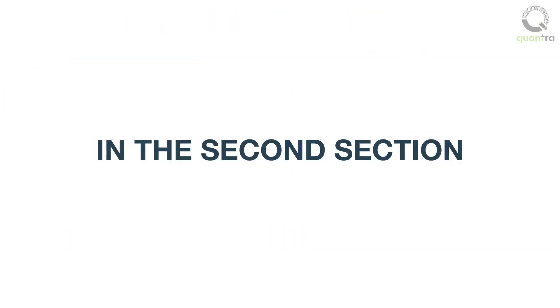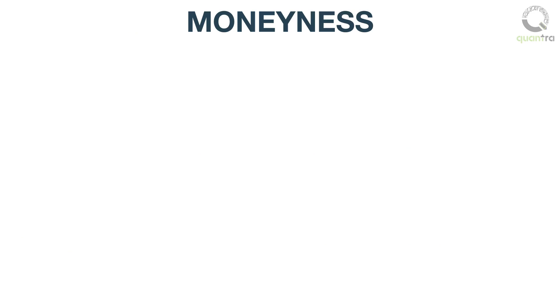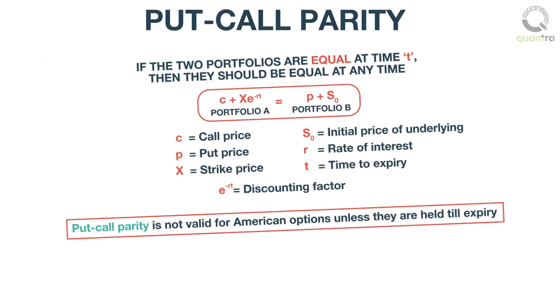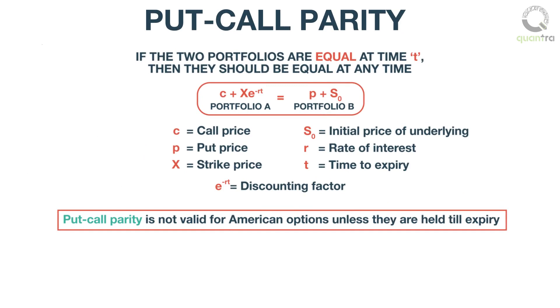In the second section, we understood the concept of moneyness — that is, whether the option is in the money, at the money, or out of the money. We also learned about the put-call parity. The put-call parity is given by the following equation, and if this equality is violated, then there is an arbitrage opportunity.